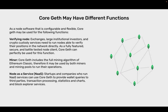CoreGeth may have different functions. As a configurable and flexible node software, CoreGeth may be used for the following functions. Verifying node: exchanges, large institutional investors and crypto custody services need to run nodes able to verify their positions in the network directly — as a fully featured, secure and battle-tested node client, CoreGeth can perfectly be used for this function. Miner: CoreGeth includes the full mining algorithm of Ethereum Classic, so it may be used by both miners and mining pools to run their operations. Node as a service (NaaS): startups and companies who run NaaS services can use CoreGeth to provide wallet queries to third parties, transaction processing, statistics and charts, and block explorer services.